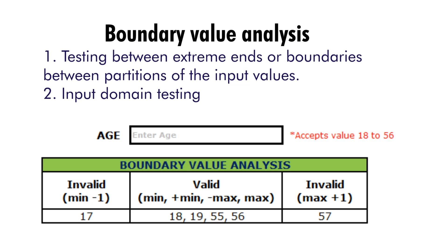Let's consider this example: an age text box that accepts values between 18 to 56. Always start with valid cases. You will consider: 18 (minimum), 19 (minimum plus one), a normal value, 55 (maximum minus one), and 56 (maximum) — these four or five cases are valid and should pass. Then move to invalid cases: minimum minus one (17) and maximum plus one (57) — those should fail. So you will have six cases to test.